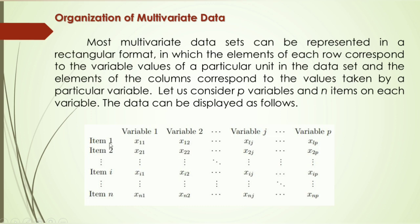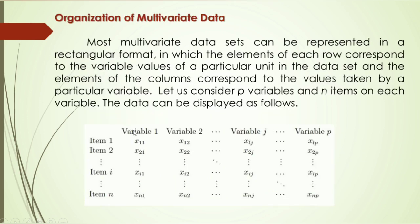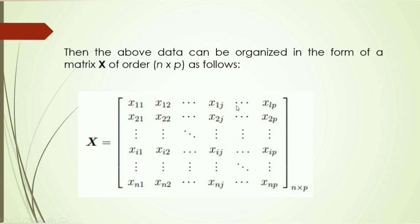This raw multivariate data can be organized in the form of a matrix. In multivariate statistics, we always use matrices. The data with p variables and n items is organized as a matrix of order n by p — n rows representing items and p columns representing variables. In multivariate analysis, we always use matrix notations to analyze the data.